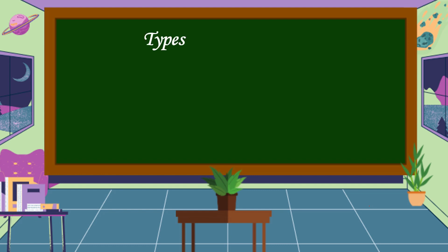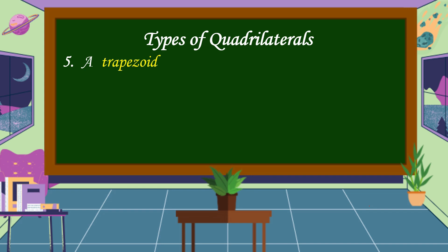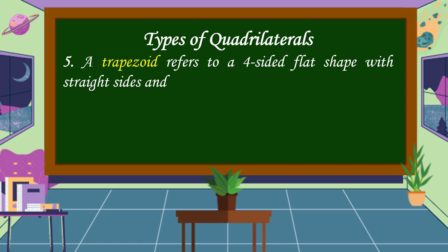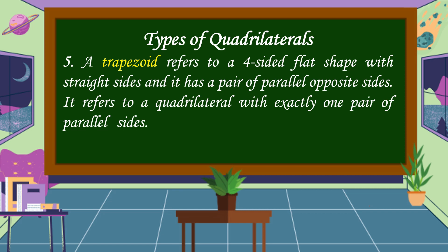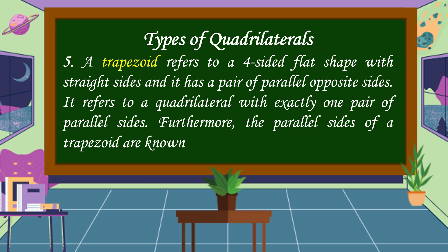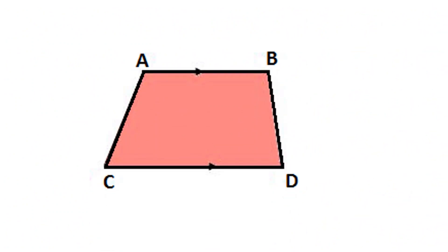The last type of quadrilaterals is a trapezoid. A trapezoid refers to a four-sided flat shape with straight sides and it has a pair of parallel opposite sides. It refers to a quadrilateral with exactly one pair of parallel sides. Furthermore, the parallel sides of a trapezoid are known as bases. This is a trapezoid: AB is parallel to CD.